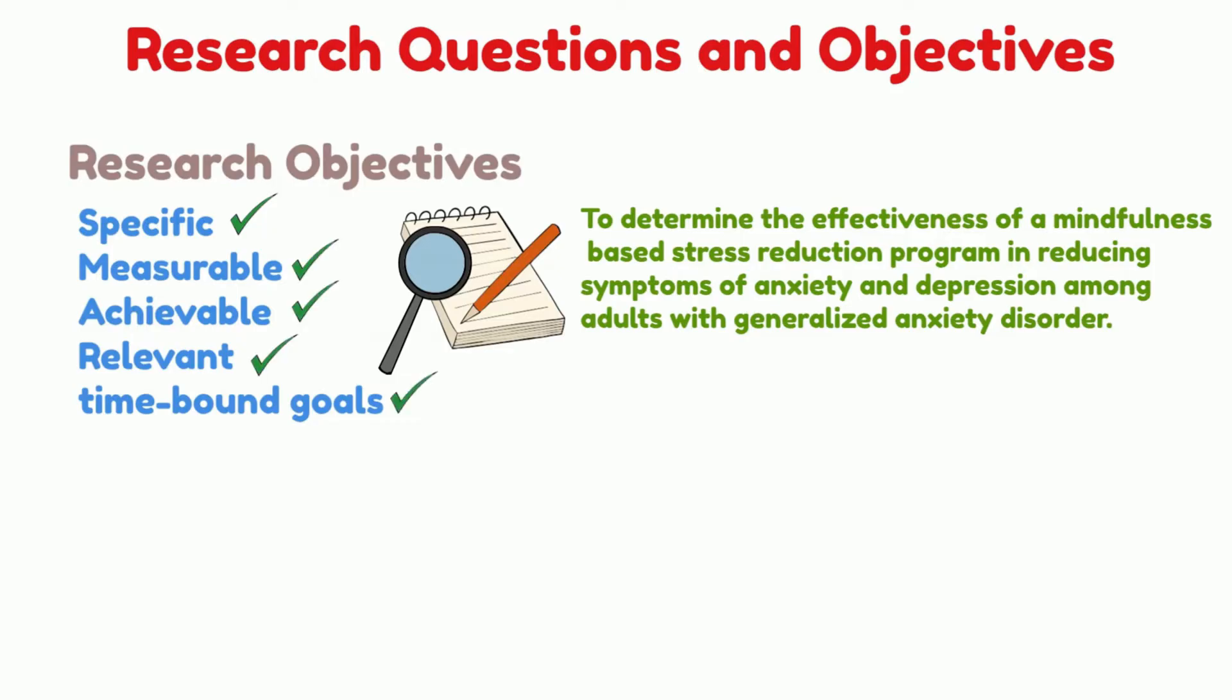It identifies the target population, adults with generalized anxiety disorder, the intervention being studied, a mindfulness-based stress reduction program, and the outcome being measured, reduction in symptoms of anxiety and depression. The objective is feasible and relevant to the research problem being addressed, and it has a clear timeline for completion.